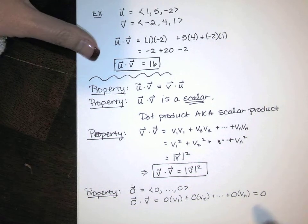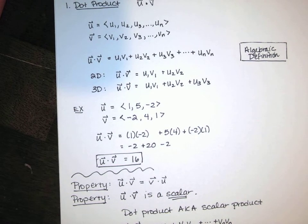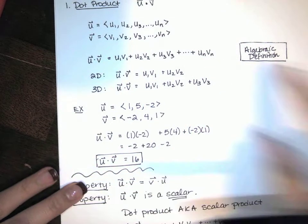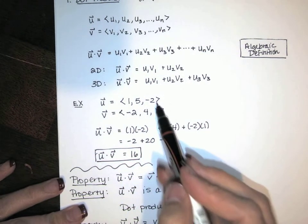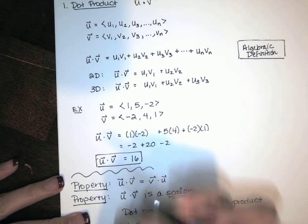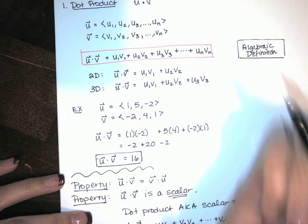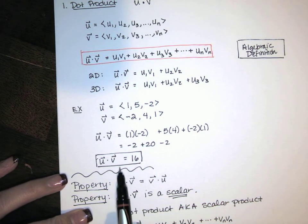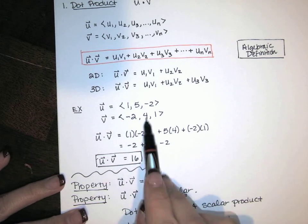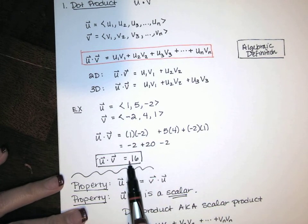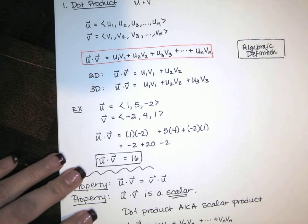The next definition of dot product is called the geometric definition, which is much more insightful. The algebraic definition is very good for calculating things — if you've got components, just multiply and add. Once we know the geometric definition, we'll be able to interpret this number geometrically, so that algebraic calculation will mean something.